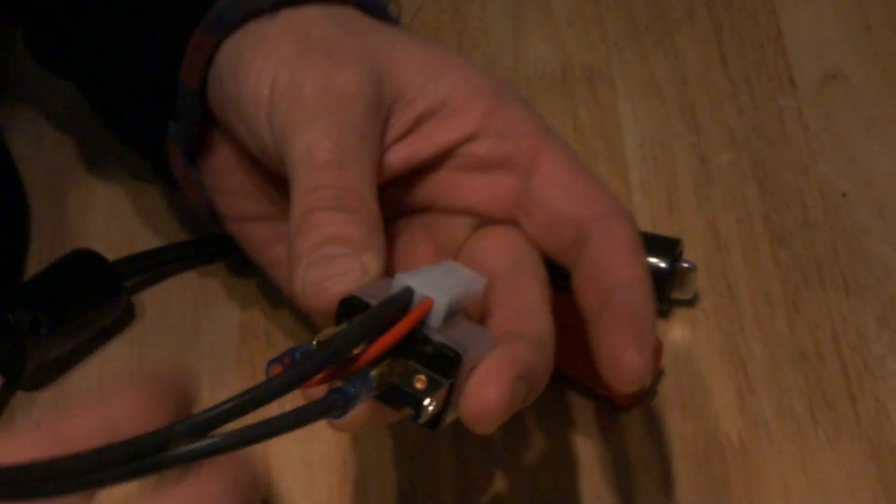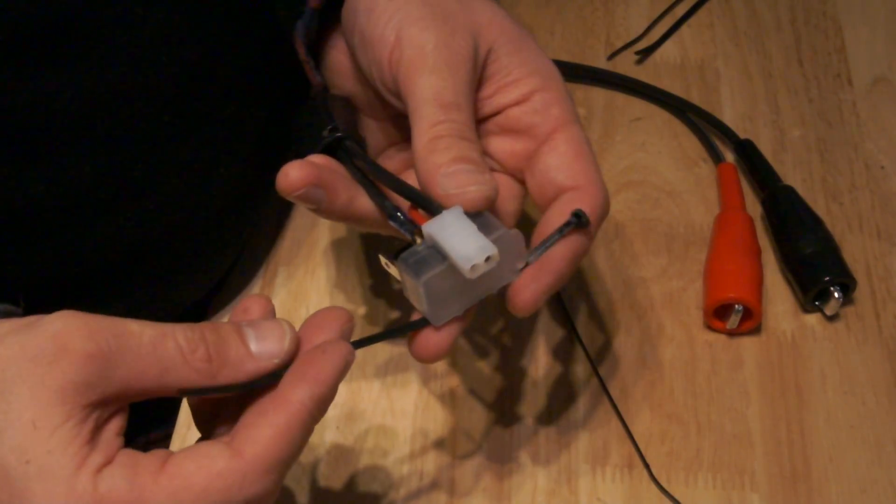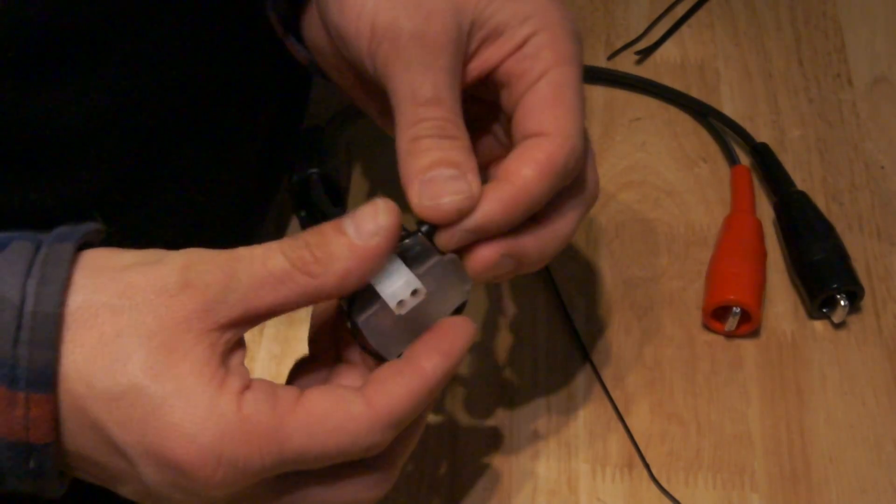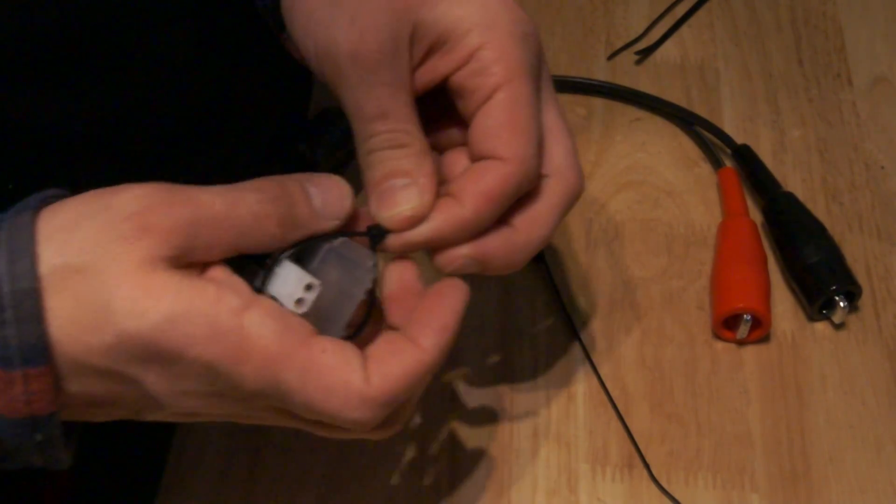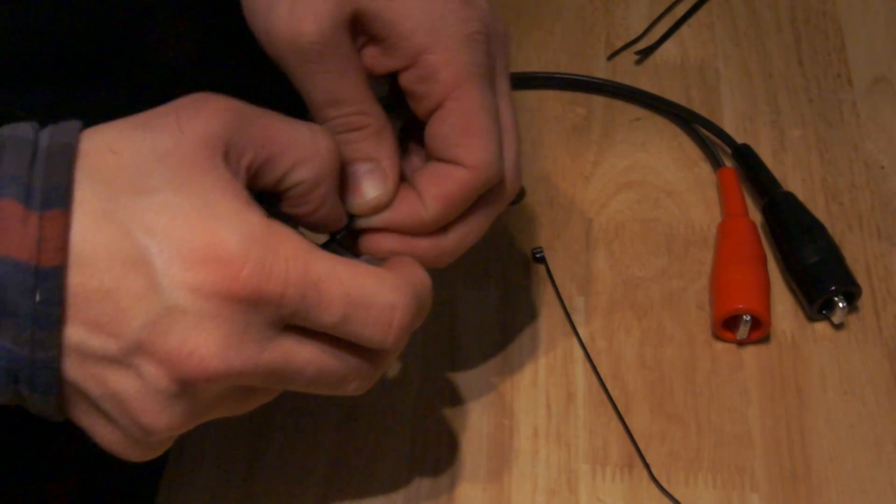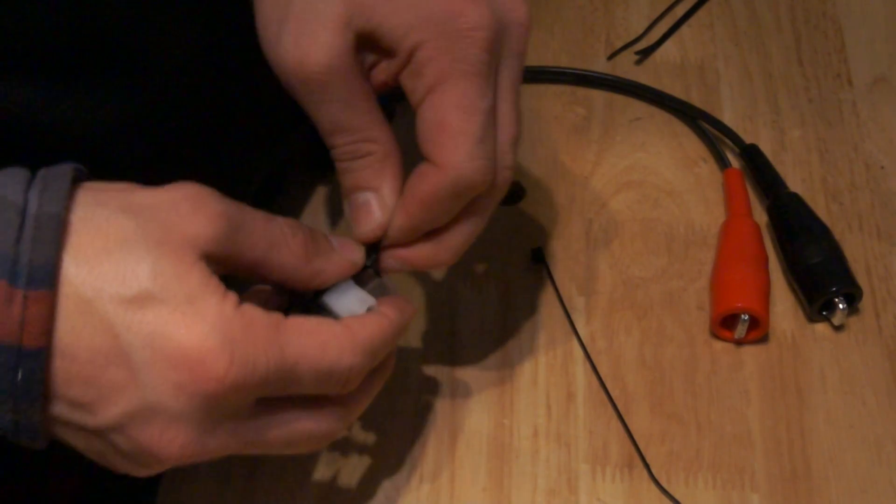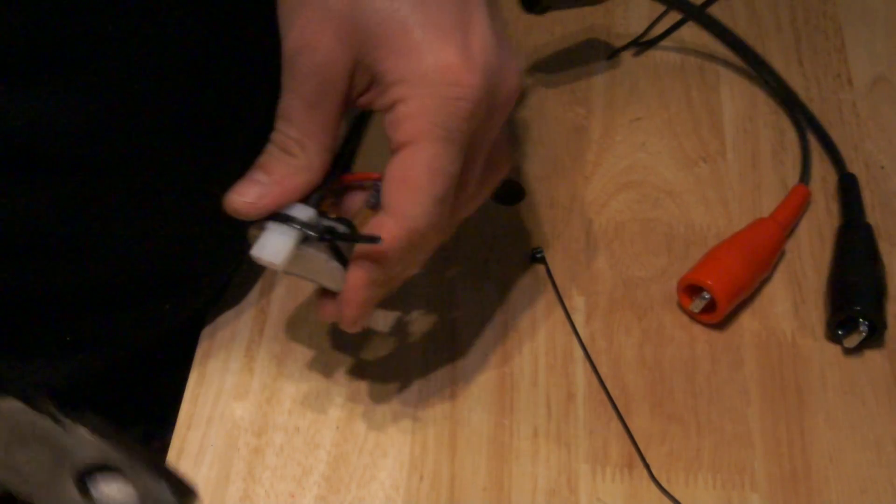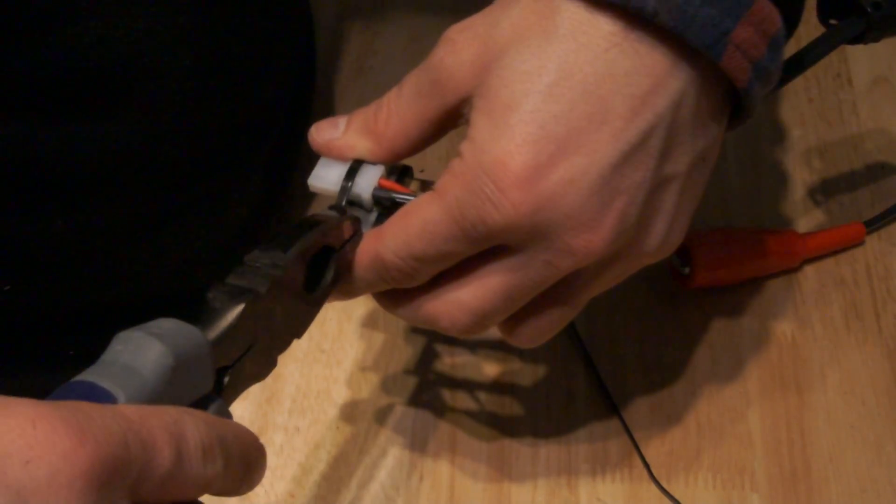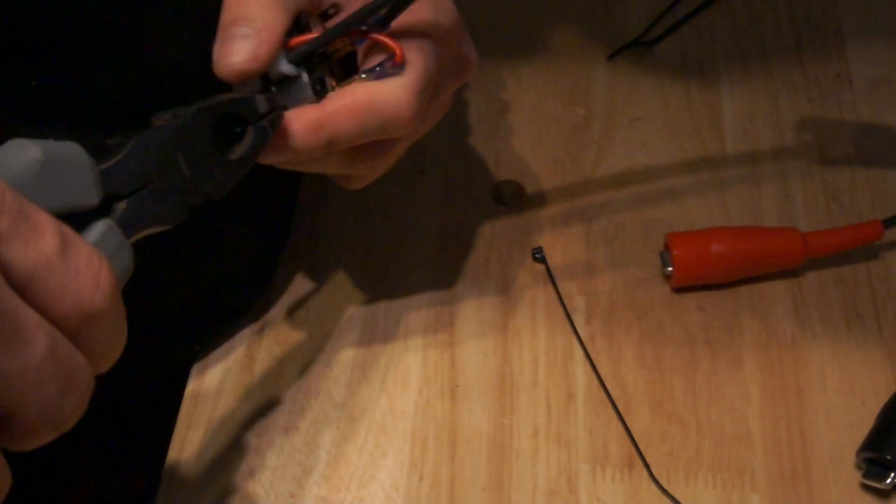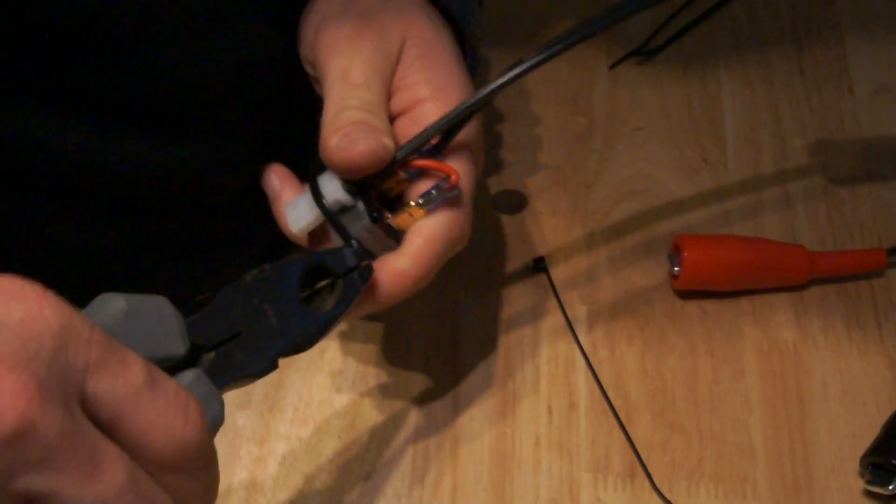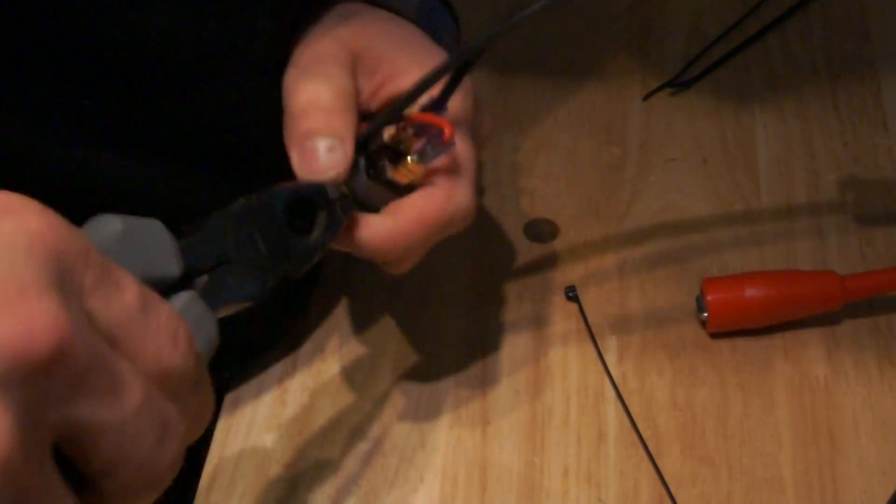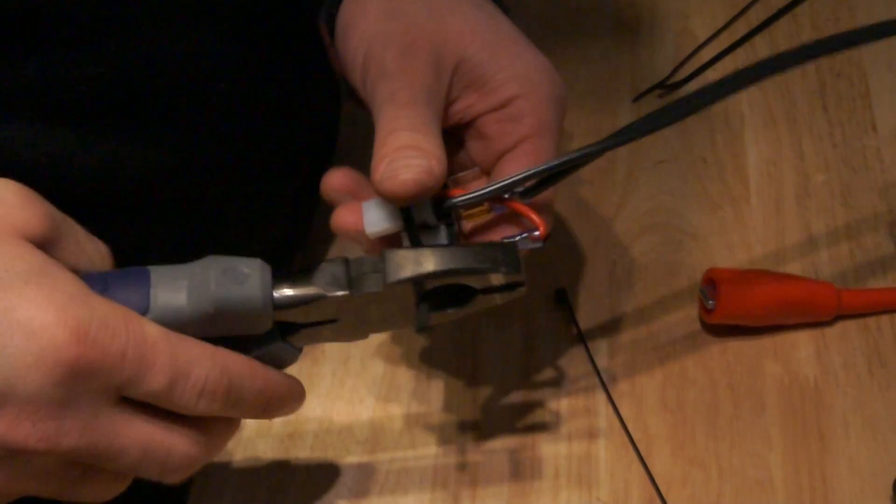There we are. Now we're going to put the zip ties in place. We'll put two over the AML connector and the circuit breaker. Just clip off the excess.